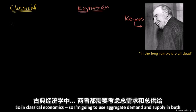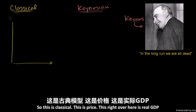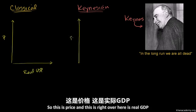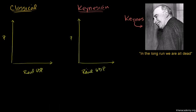In classical economics, I'm going to use aggregate demand and aggregate supply in both models. So this is classical: this is price, and this right over here is real GDP. And I'm going to do it for the Keynesian case as well — this is price, and this right over here is real GDP.